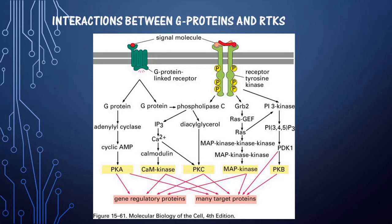These are the different interactions between G proteins and RTKs, including PKA, PKC, calmodulin kinase, MAP kinase, and PKB, showing how they interconnect in downstream signaling.